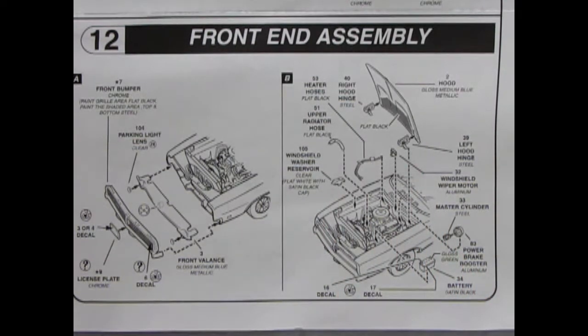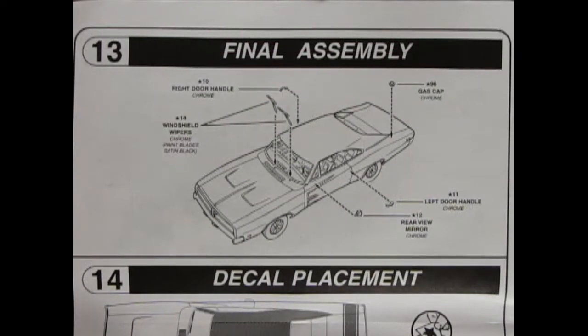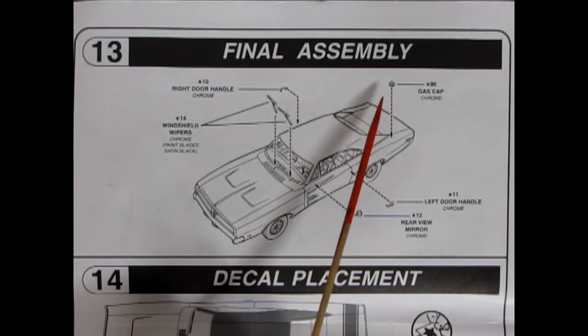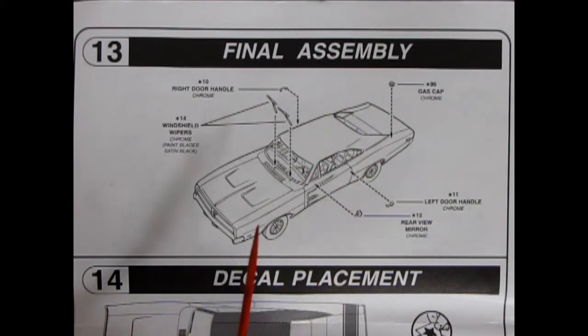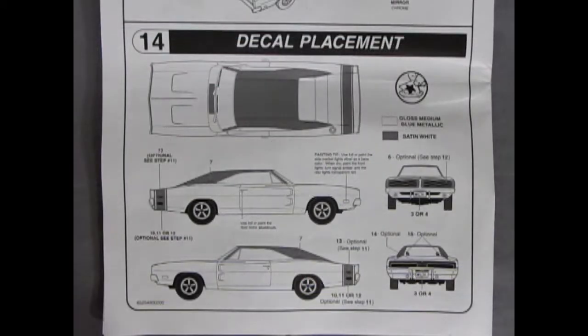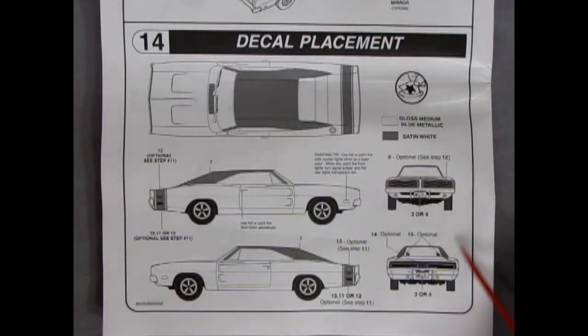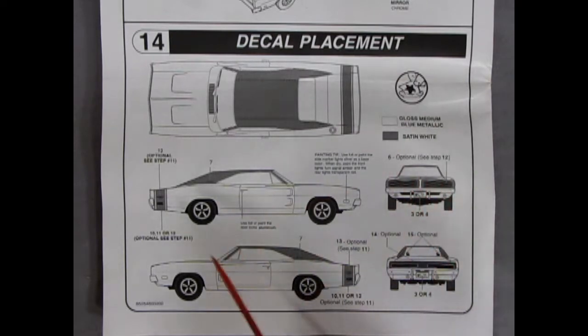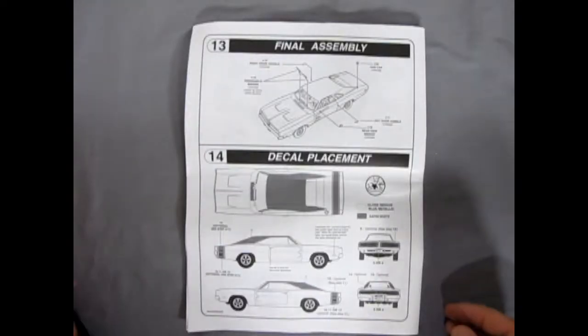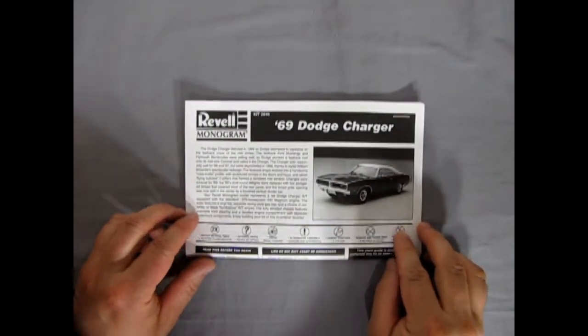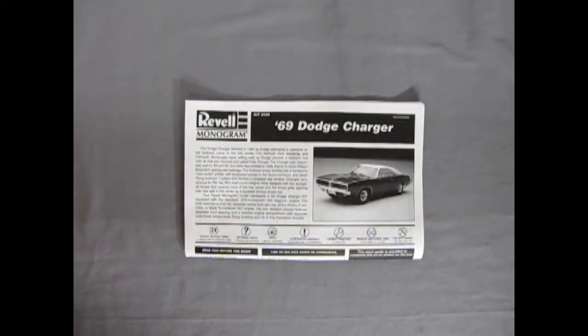Panel 13 brings us to our final assembly which of course are the windshield wipers and the door handles and mirror and the awesome gas cap popping onto our body. Final panel 14 is our decal placement and here you get your choice of the optional stripes. There's three different colors to choose from and then it's showing you all the different decals and everything that goes on there. And that brings us to the conclusion of our instruction sheet. So now let's go and see all the plastic parts.